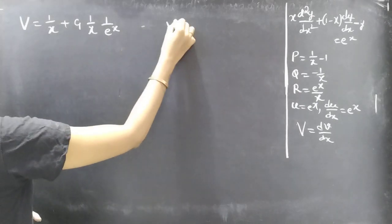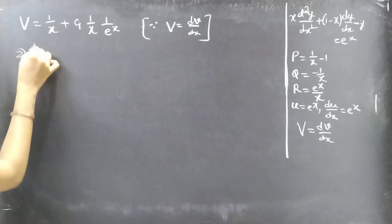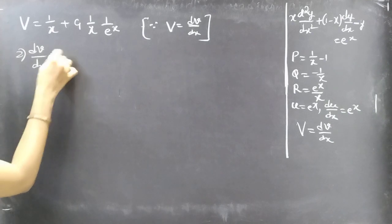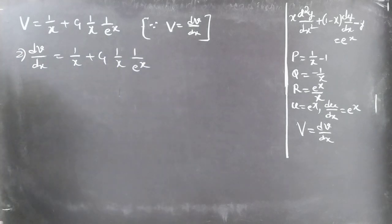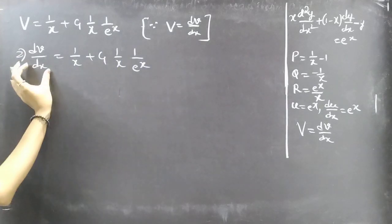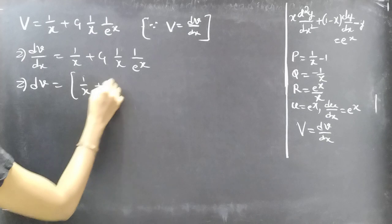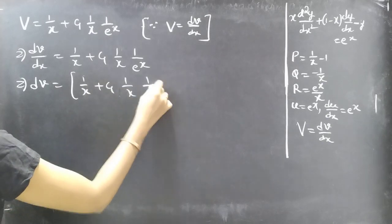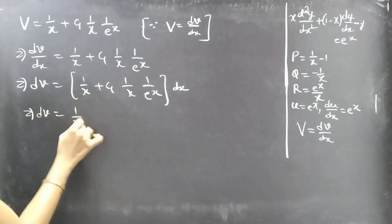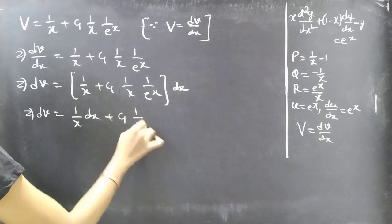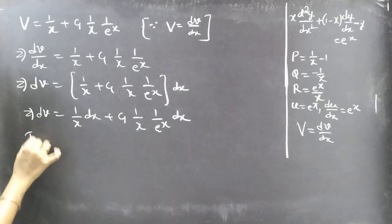Since capital V = dv/dx, replacing gives dv/dx = 1/x + C₁ · (1/x) · e^(−x). Separating variables by taking dx to the right side: dv = (1/x + C₁ · x^(−1) · e^(−x)) dx, and the variables are now separable so we can integrate.